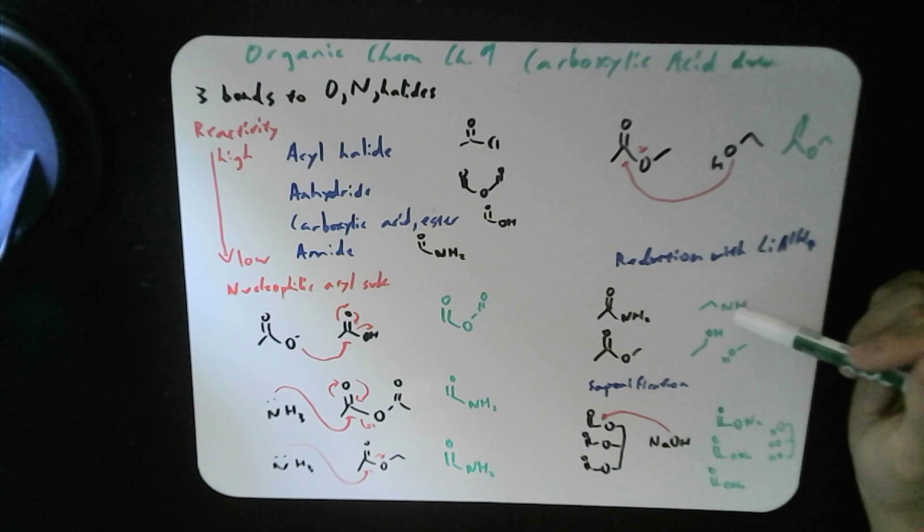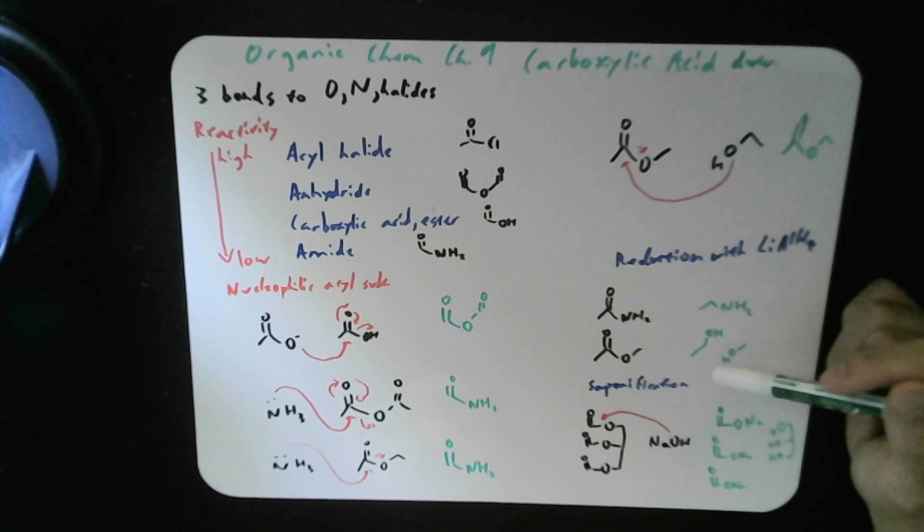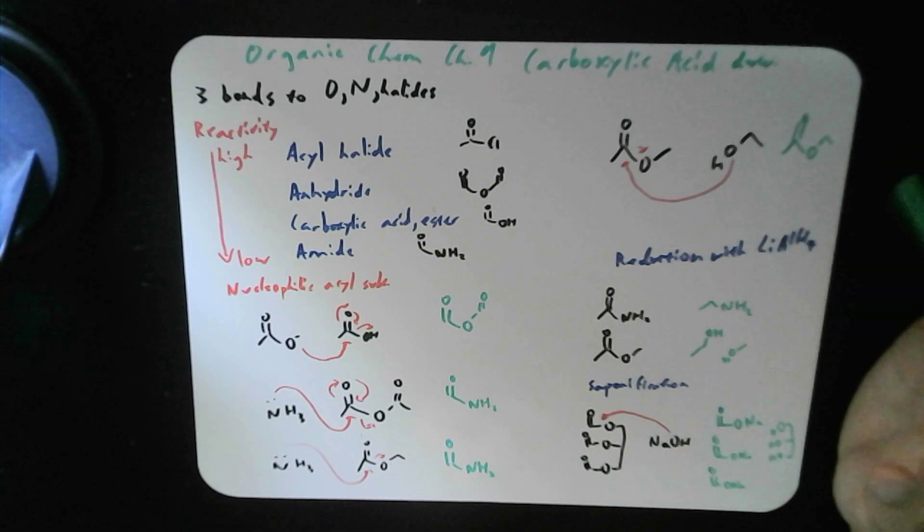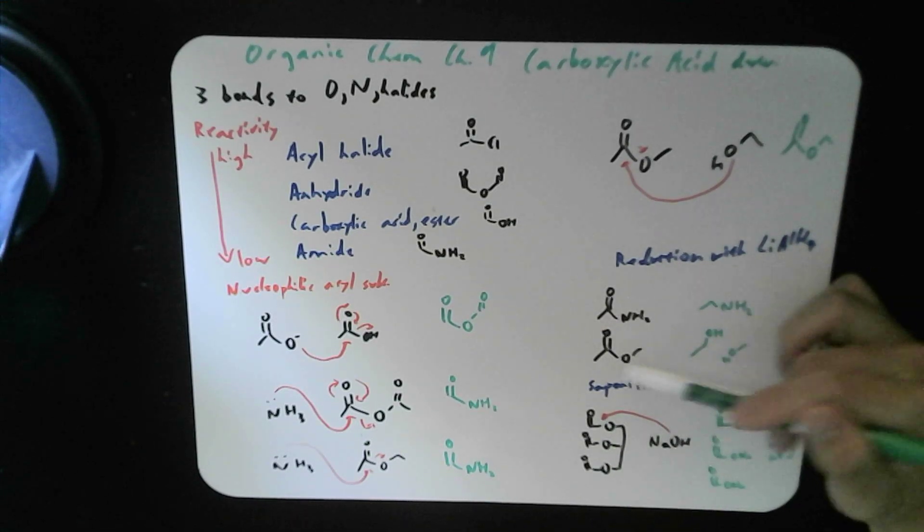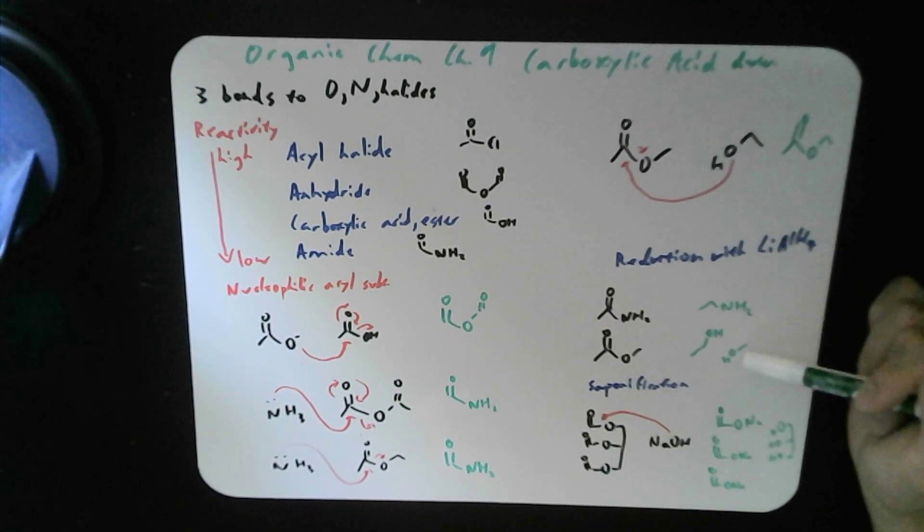For amide, it turns into amine. And for esters, it turns into alcohol. And it's split into two alcohols. By adding H here and adding H here, it turns into ethanol and methanol here.